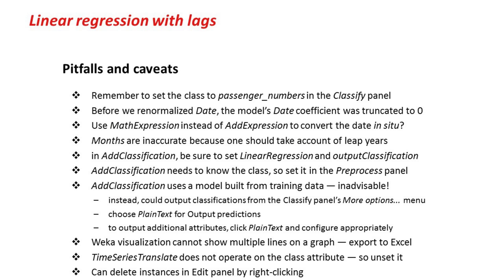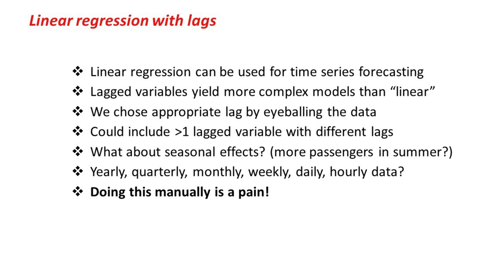I've done a lot of things rather quickly here. You're going to be redoing them yourself in the activity with a different classifier. I've got a list of some of the pitfalls — you might want to refer back to that when you do the activity. To summarize: we've learned that linear regression can be used for time series forecasting, and that lag variables yield much more complex models than straight-line ones. We chose the appropriate lag by eyeballing the data and noticing it varied in an annual cycle. We could include more than one lag variable, think about seasonal effects, yearly, quarterly, daily, or hourly data. Doing all this manually is a pain, so the time series forecasting package helps you do this more easily — and that's what we're looking at in the next lesson. Go do the activity and I'll see you in Lesson 1.3. Bye for now.